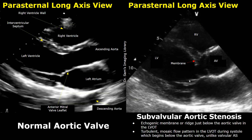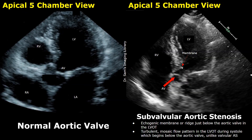In subvalvular aortic stenosis, there is a small membrane present just below the aortic valve. It is a congenital condition. An echogenic ridge-like structure will be seen just before the aortic valve on echocardiography. This membrane can cause aortic valve stenosis. Subvalvular aortic stenosis can also be seen in the apical 5-chamber view as an echogenic ridge near the aortic valve. Normally, this ridge is not present — it is a rare condition.